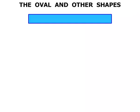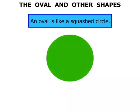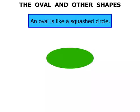The Oval and other Shapes. Now an Oval is like a squashed Circle. So if we have a Circle here and then we squash it, then we have ourselves an Oval.